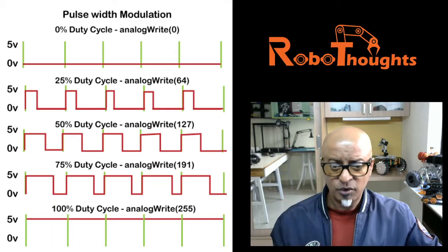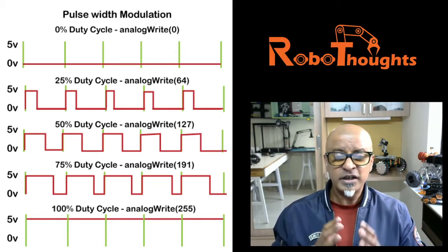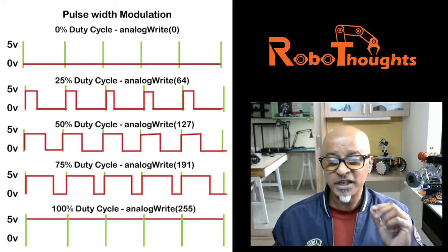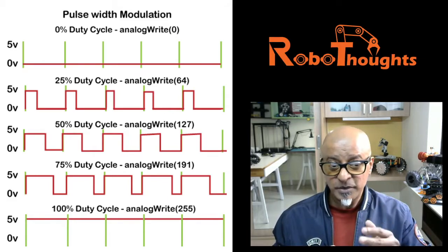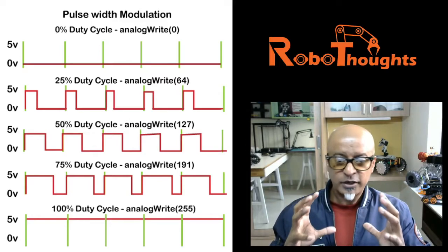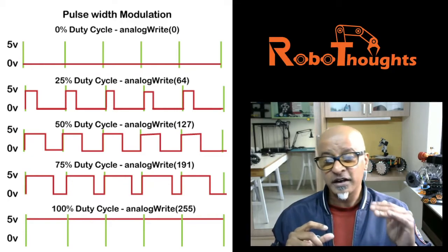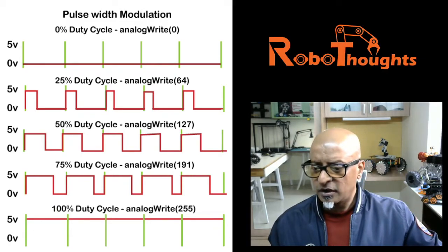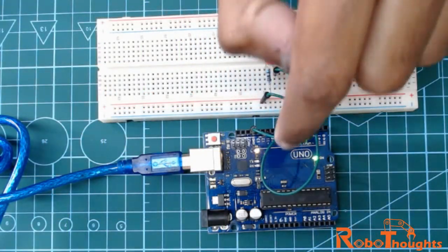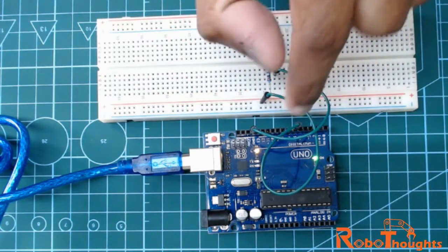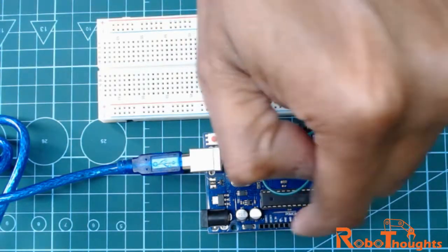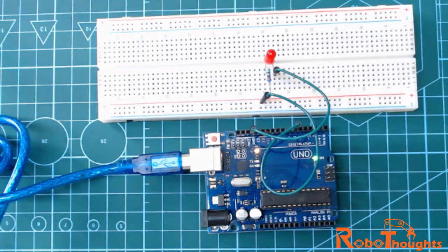The Arduino UNO consists of 14 digital input and output pins, where pins 11, 10, 9, 6, 5, and 3 are specific PWM pins. You can use them as digital pins too, but the Arduino architecture designates these six pins for PWM. If you look at your Arduino board, these pins have a squiggly mark — for example, pin 11 and pin 6 both have a squiggly mark — so you can easily identify and hook up a PWM pin.